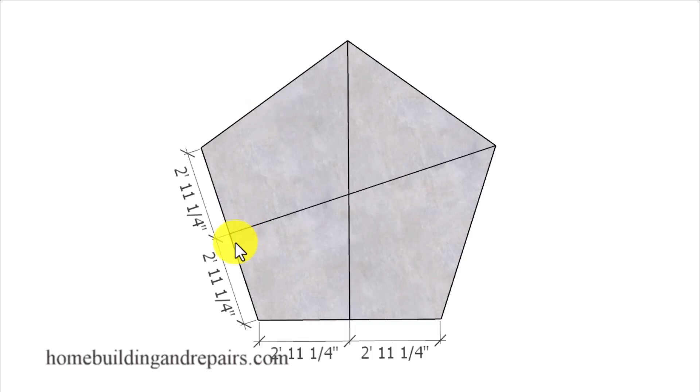So the first thing we want to do is find the center of the building and the center where the rafters are going to connect to each other. And that can be done by finding the middle of one side and then connecting it to the other side. And you're going to want to do that from at least two sides to locate the center.